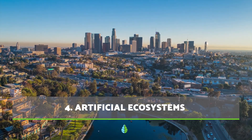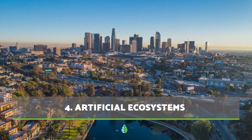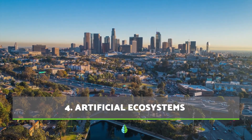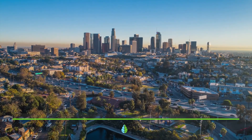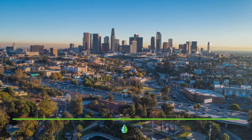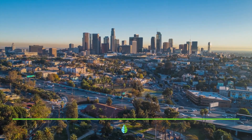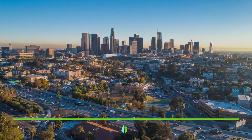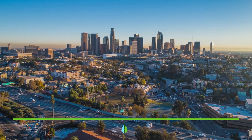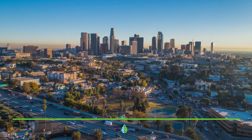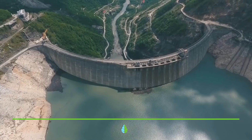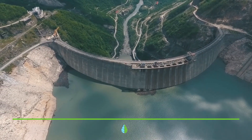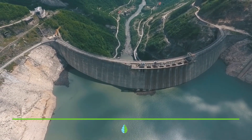Artificial ecosystems are unnatural ecosystems created or changed by humans. The main types of artificial ecosystems are urban ecosystems, agricultural ecosystems, or reservoir ecosystems.